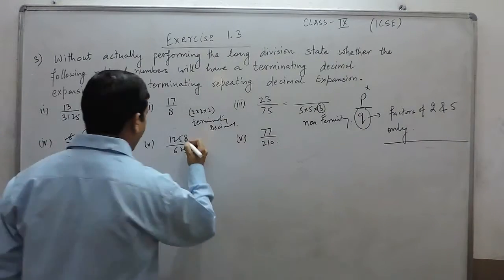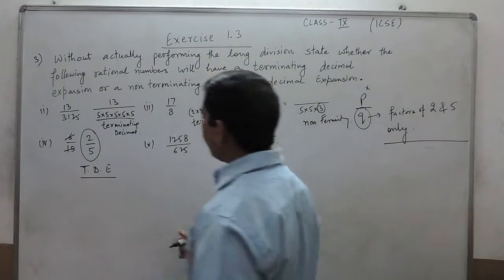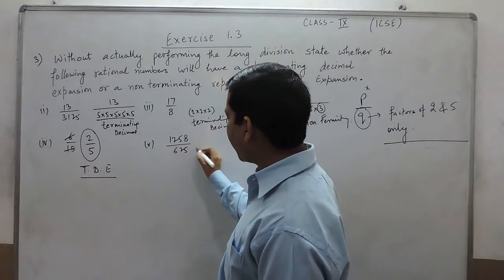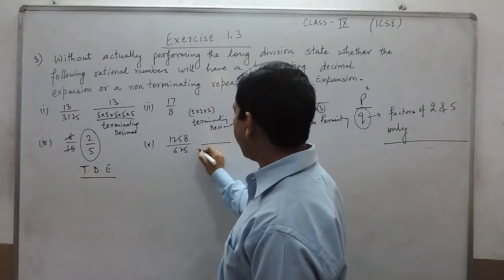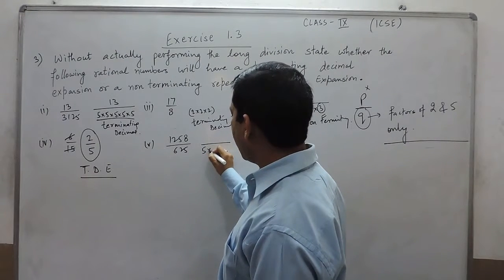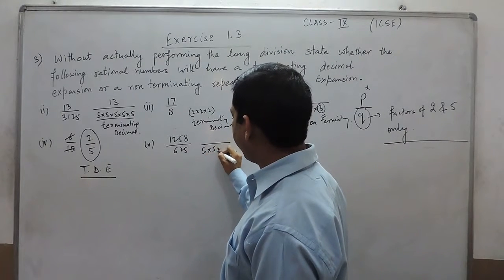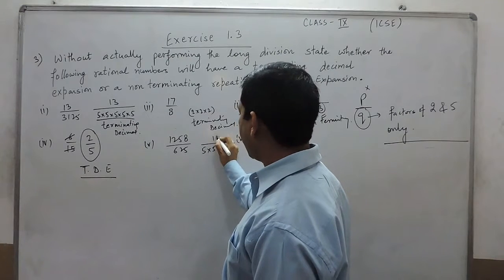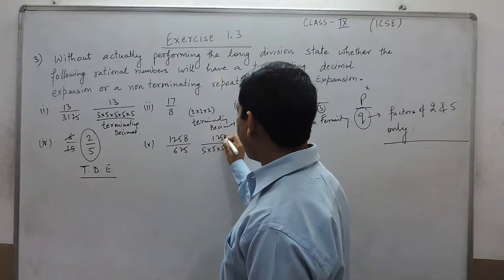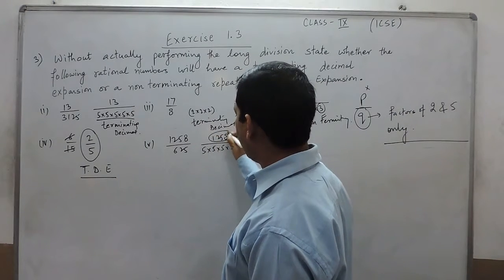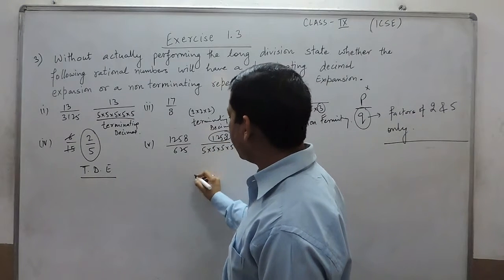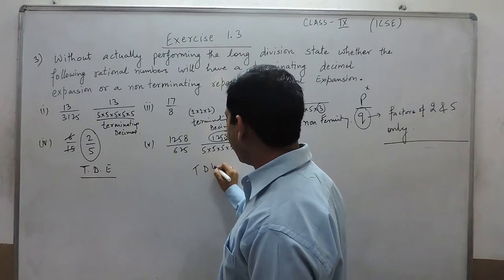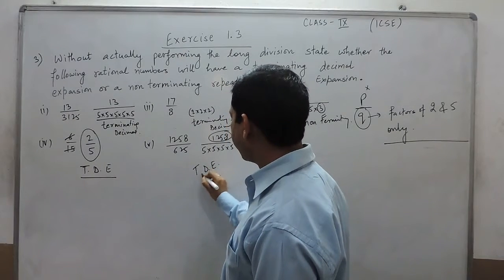In the denominator of 2 upon 5, there is only 5. It means it is a terminating decimal expansion. When we talk about 158 upon 625, they cannot be cancelled out. In the denominator, it is 5 × 5 × 5 × 5 × 5, and we are not bothered about the numerator. So this is also a terminating decimal expansion.